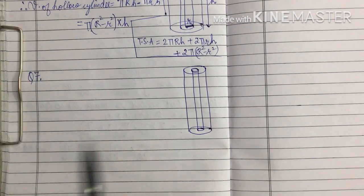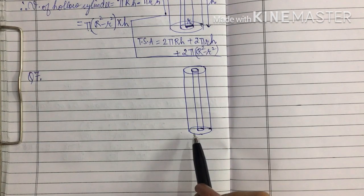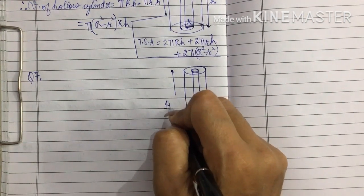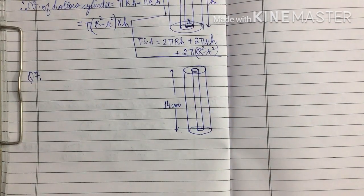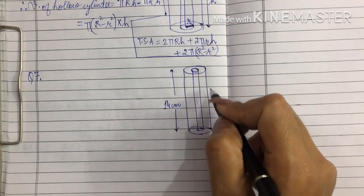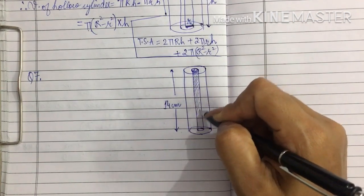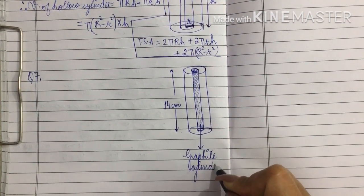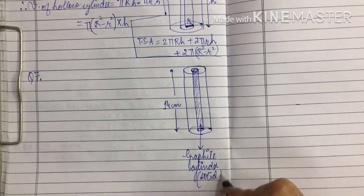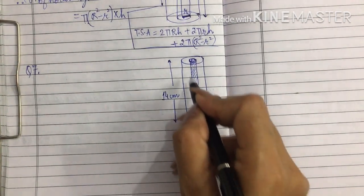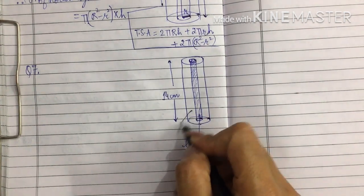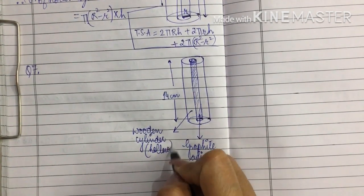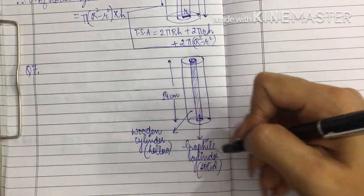The pencil is cylindrical in shape with a length (height) of 14cm. There are two cylinders: the wooden part on the outside, which is hollow like a cello tape roll, and the graphite (lead) cylinder on the inside, which is completely solid. The hollow wooden cylinder's empty interior is filled by the solid graphite cylinder.